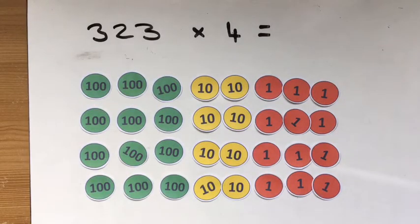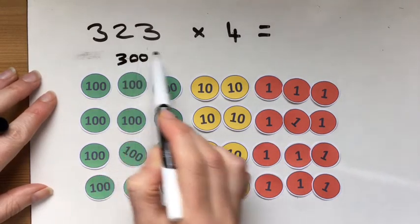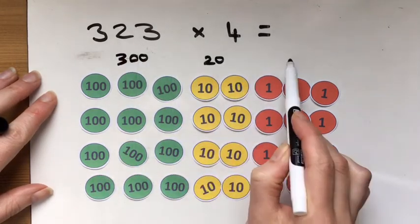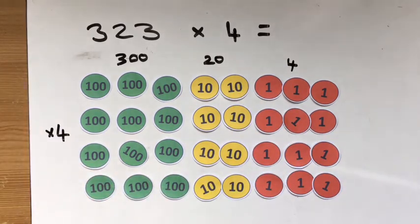Okay, let's have a look at this multiplication then. We've got three hundred and twenty four times by four. We've got four lots of them. Let's see what we've got all together.